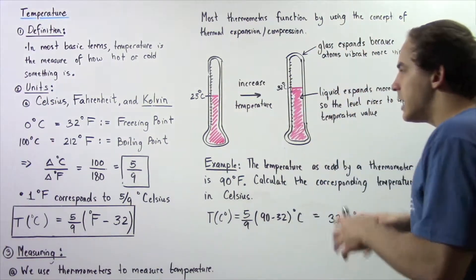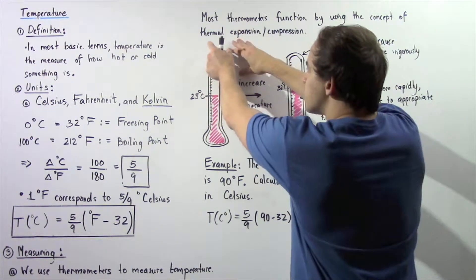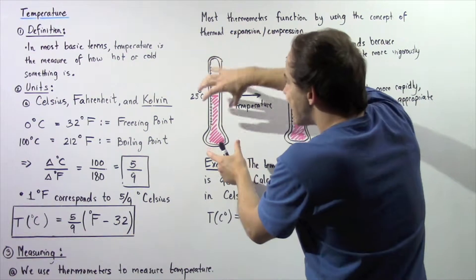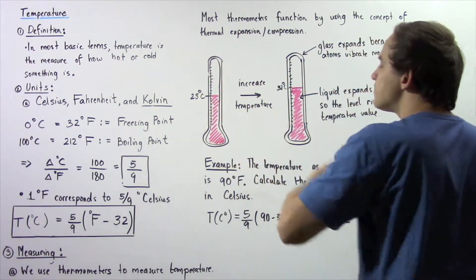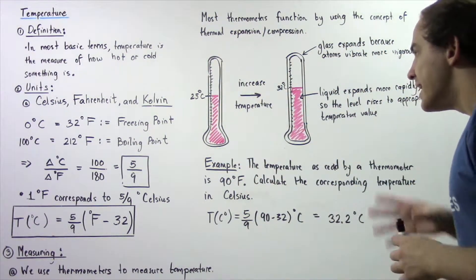For example, let's look at the following thermometer that is essentially composed of a glass tube. Inside this glass tube, we have a certain fluid, let's say mercury.